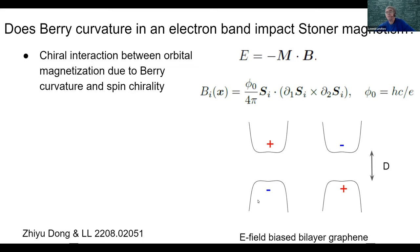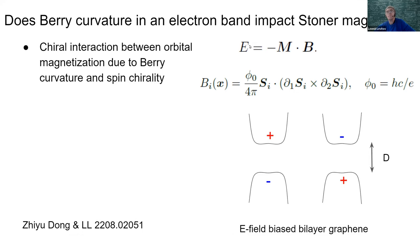There is a minus m·B interaction arising, where m is the orbital magnetization due to Berry curvature of the states filled by carriers in the band, and B is a magnetic field which is proportional to S·(∂S × ∂S) of spin-polarized electrons. It is non-zero if magnetization is twisting, and B is proportional to the chirality of that twisting texture.